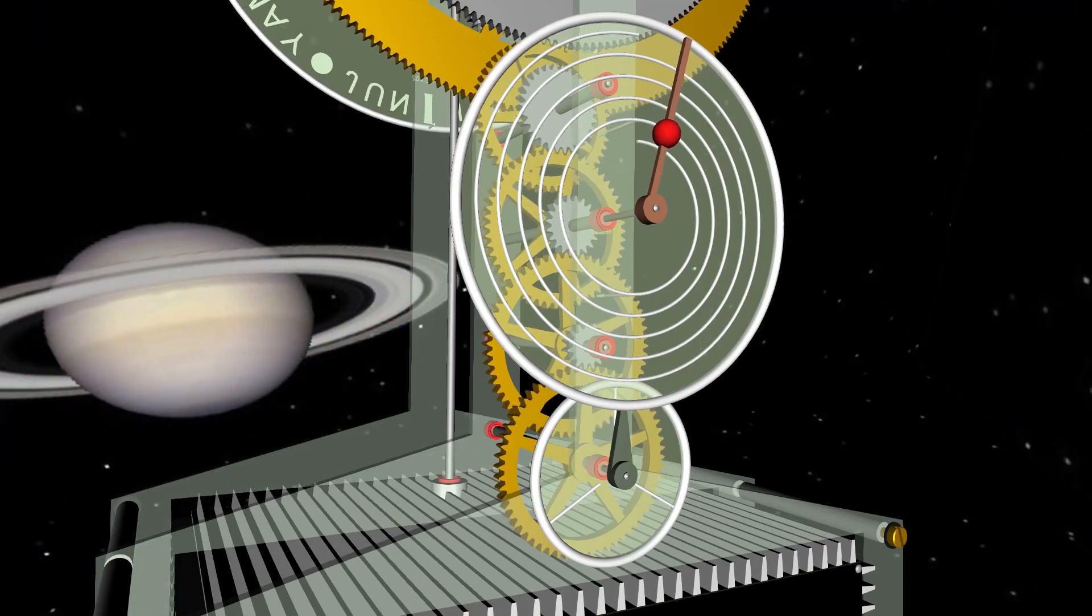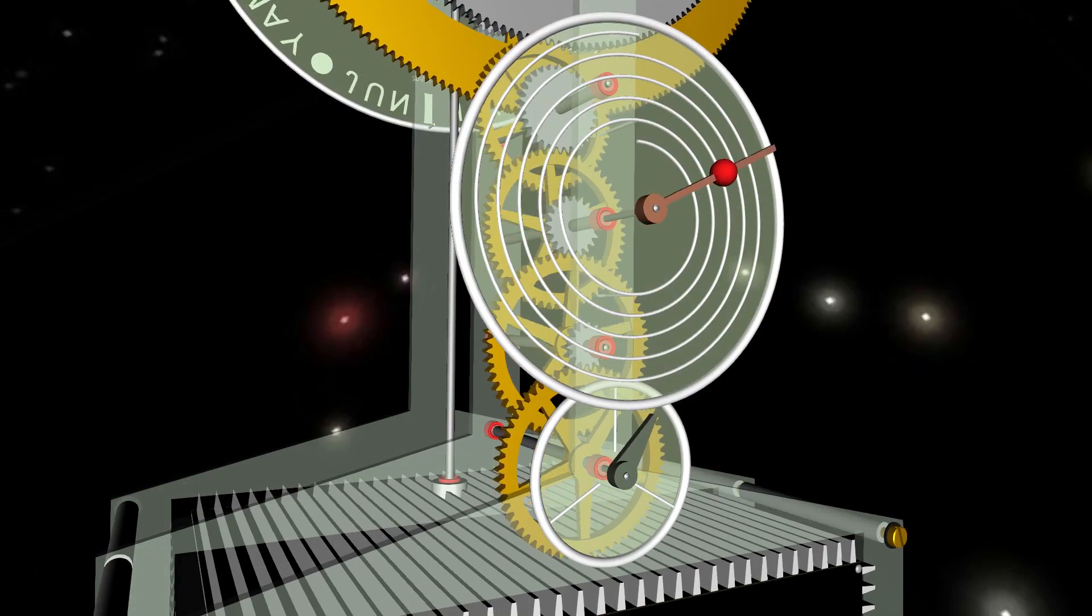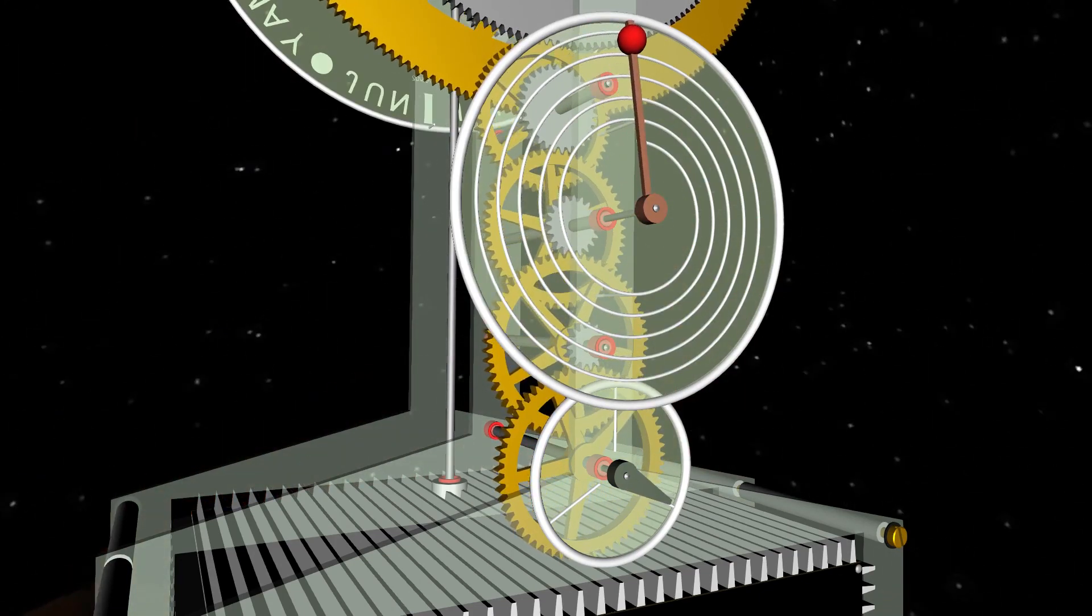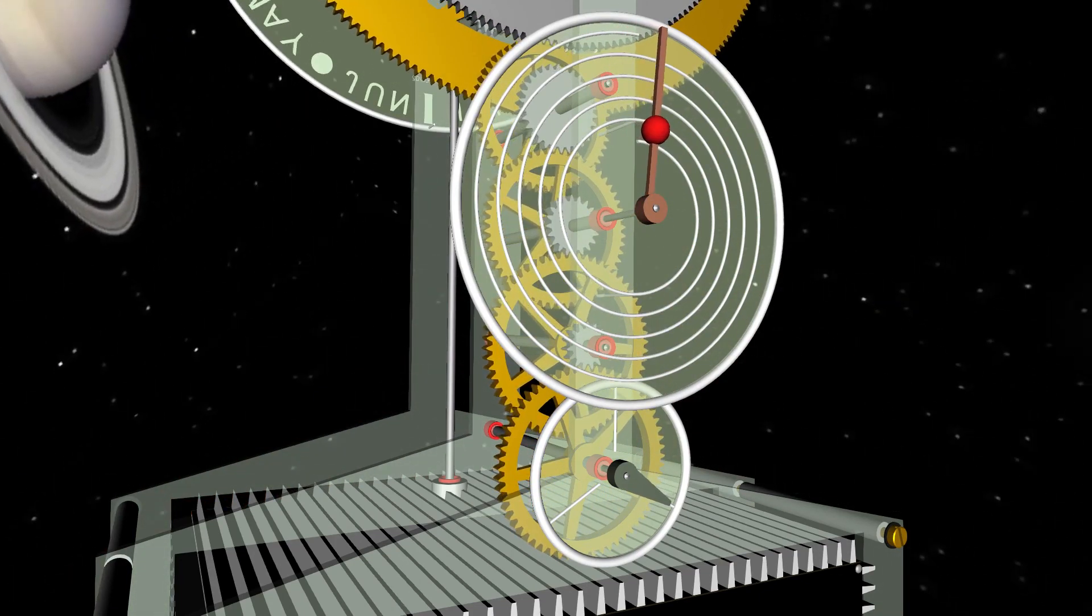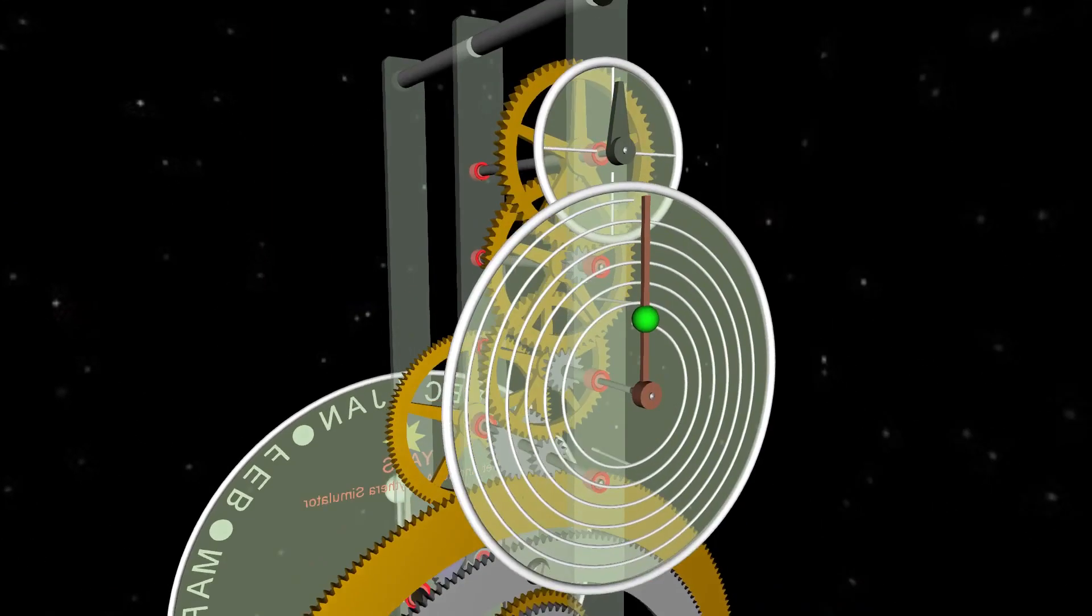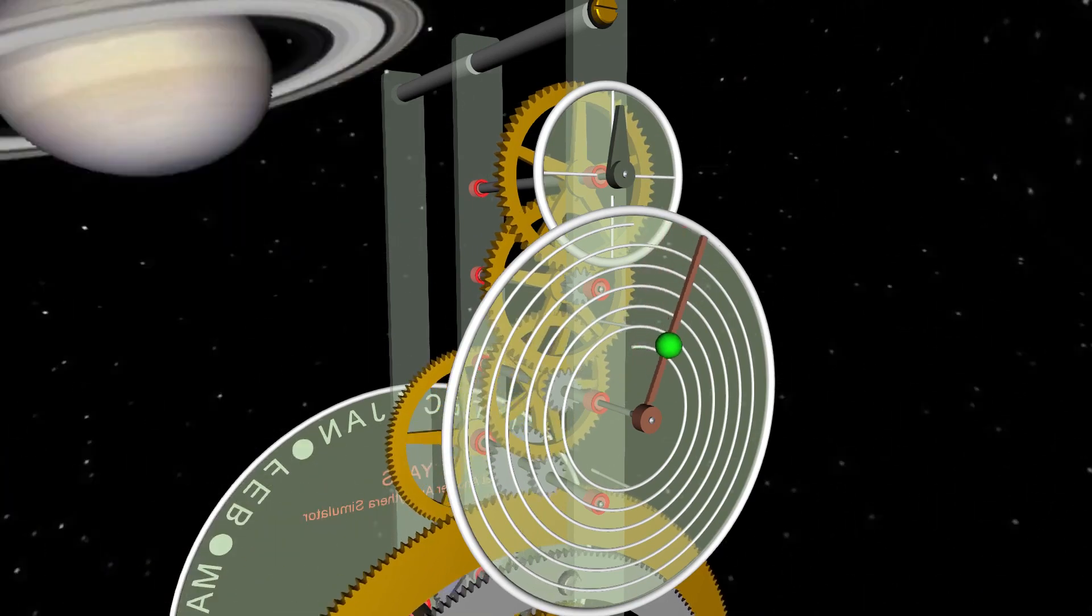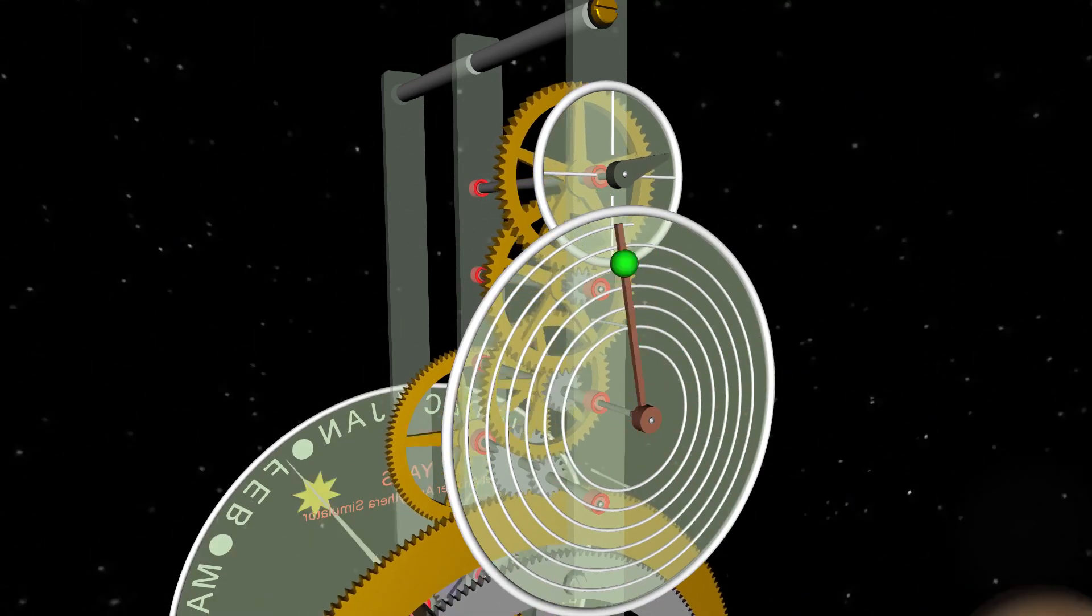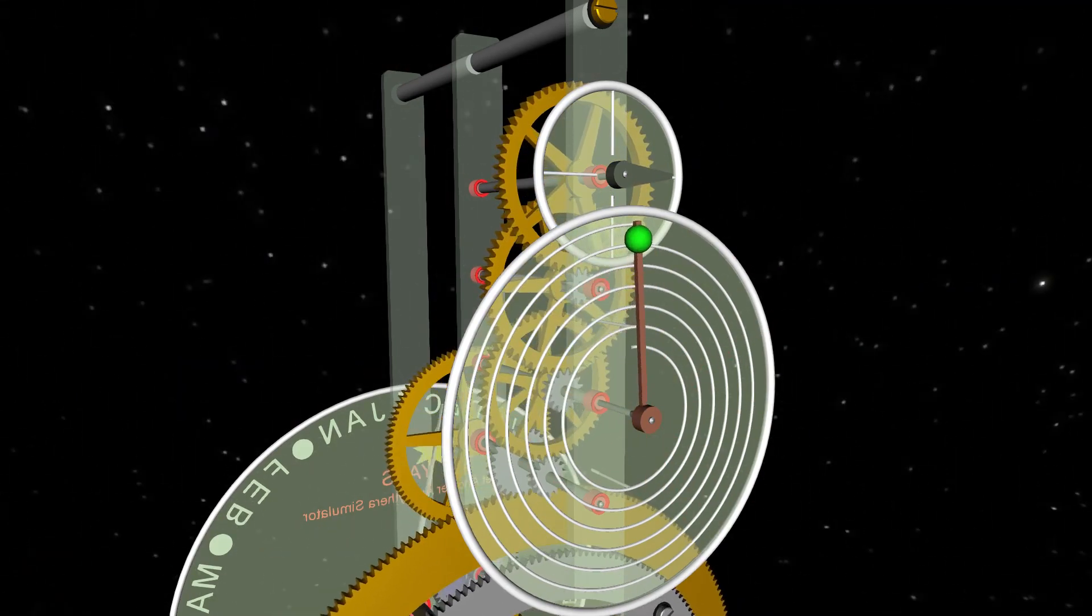The Antikythera was used to predict astronomical positions and eclipses for calendar and astrological purposes decades in advance. It was also used to calculate the ancient Olympic Games timing and to track the metronic calendar. The Antikythera mechanism is based on theories of mathematics and astronomy developed by Greek astronomers.